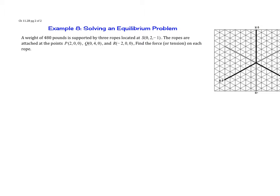11.2, day two. We're looking at solving an equilibrium problem. We have a weight of 480 pounds supported by three ropes located at S which is (0, 2, -1). The ropes are attached to the points P which is (2, 0, 0), Q which is (0, 4, 0), and R which is (-2, 0, 0). We're going to find the force or tension on each rope.